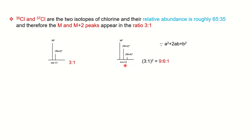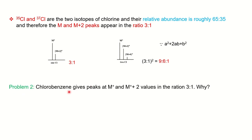The 9:6:1 pattern governs that you have 2 chlorine atoms in the unknown molecule. So if the question comes: 'chlorobenzene gives M and M+2 peaks in a ratio of 3:1, why?' — you can explain the isotope abundance and state that since the chlorine isotope is present in 65:35 natural abundance, you get a 3:1 ratio for the M and M+2 peaks.